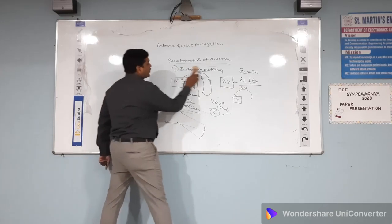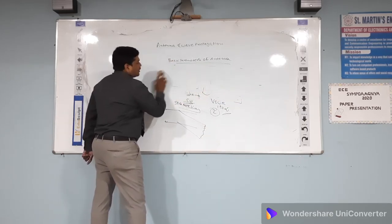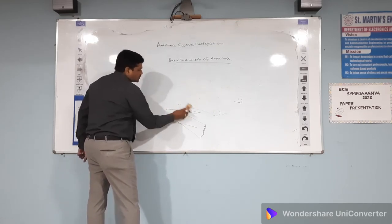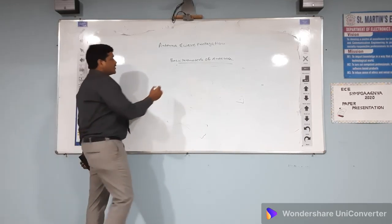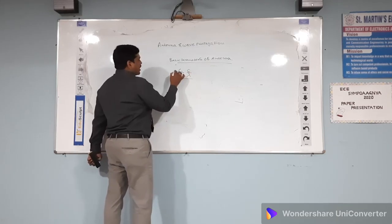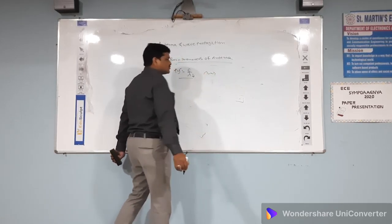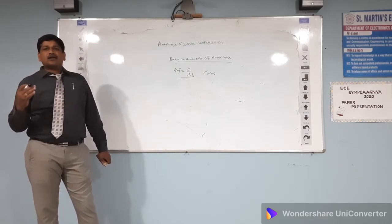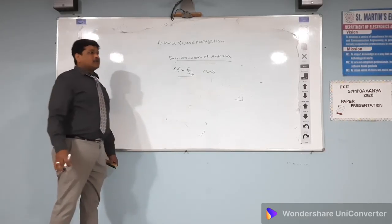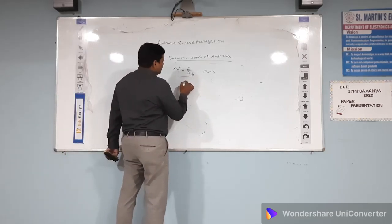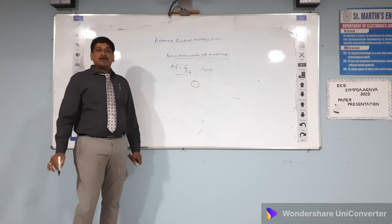Another basic parameter is frequency of operation. In antennas, the frequency of operation is very important. As the frequency is higher, the signals can penetrate more into the free space, where frequency equals C divided by lambda. Higher the frequency, shorter the wavelength and more the penetration of the signals into free space — so the data rate and information transmission rate will be faster. That's why the frequency of the antenna is very important. When the frequency is high, the diameter of the antenna will be reduced — this is the main advantage of higher frequency signals.